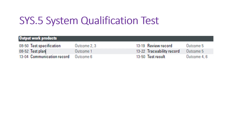The output work products from system qualification testing include the system qualification test specification, system qualification test plan, communication records, review records for the specification and strategy and test results, traceability records, test results, and logged bugs in the bug management or test management system. If you like this concept, please subscribe to my channel. Thank you so much.